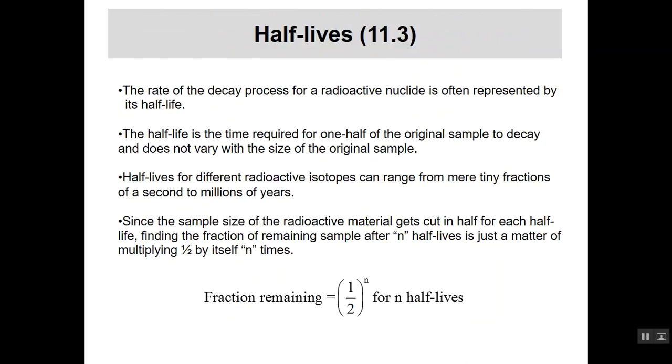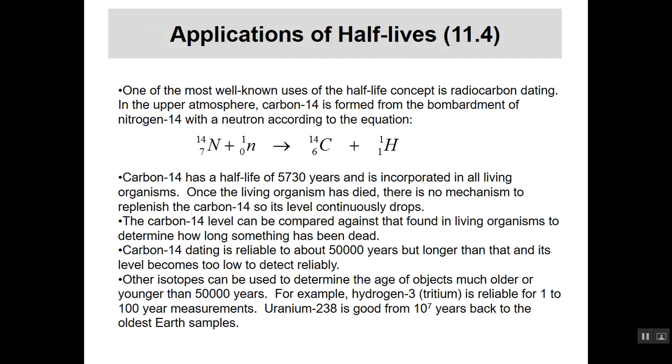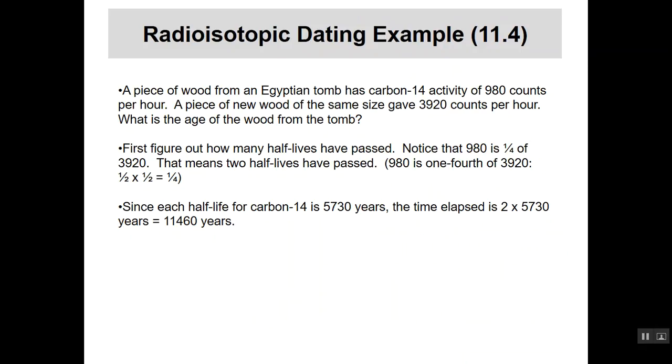Here, down at the bottom, you go back to this one, what does it tell you? It tells you if this is going to be one-fourth, then it has to have gone through two half-lives. Because one-half times one-half is one-fourth. And so it's been through two half-lives. Since each half-life is 5,730 years, time elapsed is 11,460 years. That's how old this thing is from this Egyptian tomb.